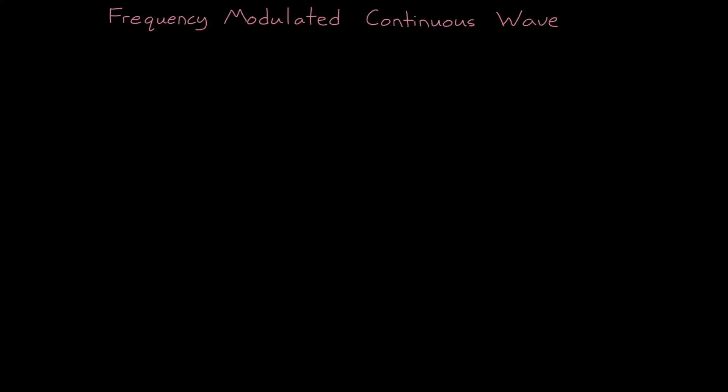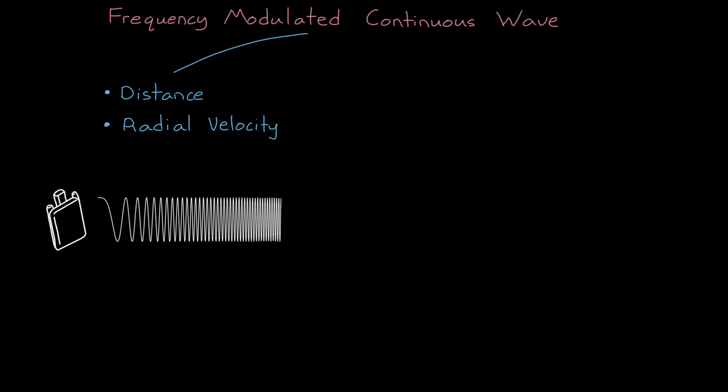Let's continue our discussion about frequency modulated continuous wave radar. In the last video we talked about how we can use FMCW radar to determine the distance and velocity of multiple objects at once.